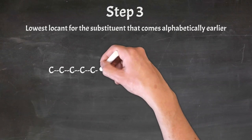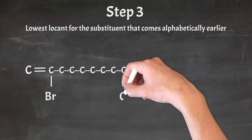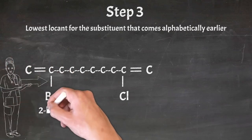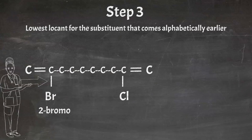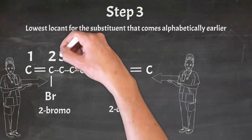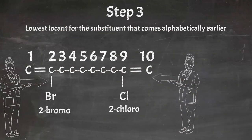Let me explain the previous rule in simpler words. Number the chain from the end where the substituent that comes alphabetically earlier gets the lowest locant. For example in this structure, from the left side bromine is at position 2, while from the right side chlorine is at position 2. In that case, number the chain from the bromine side because bromine is alphabetically earlier than chlorine.